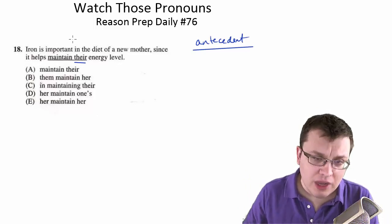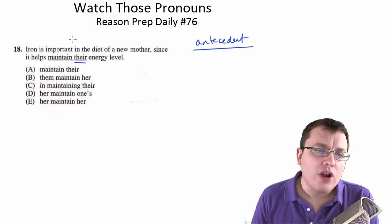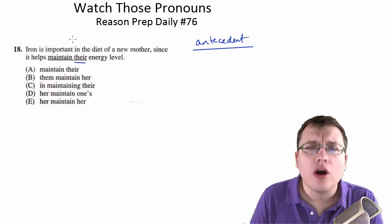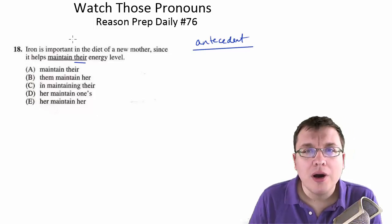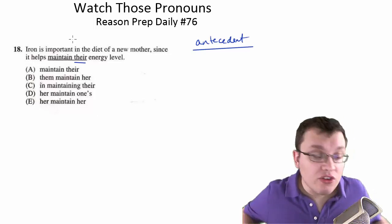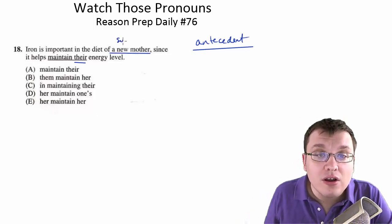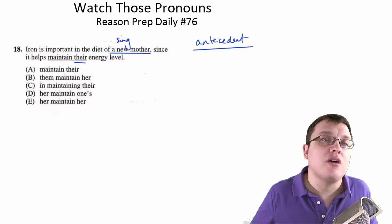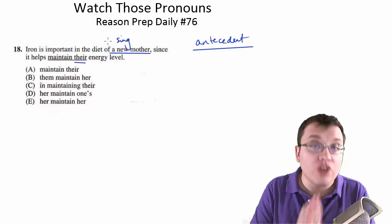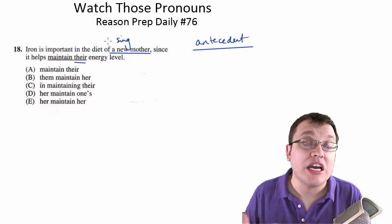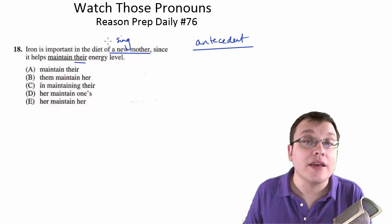So you might have read this if you got this one wrong. And if you thought, let's say A was right, you might've read this and said, oh, okay, maintain their energy level. They're talking about new mothers, the energy level of new mothers. But is that what the sentence says? No, the sentence talks about a new mother. This is singular. We are in some sense talking about the class of mothers, but grammatically, this is singular. We're talking about a mother, the general, typical mother. And this is therefore singular.